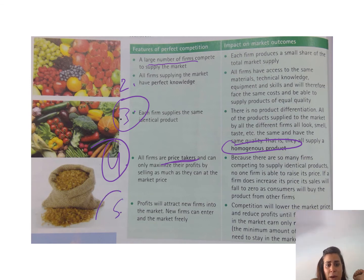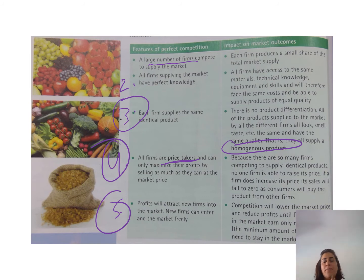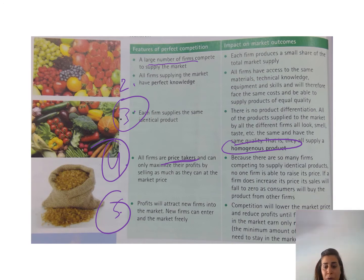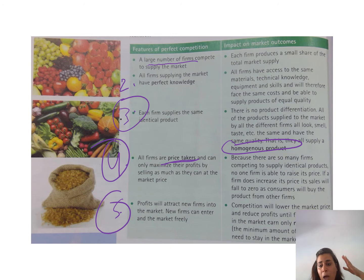The fifth and last feature of perfect competition is that profits will attract new firms into the market. There are no barriers to entry, so if I know that producing a particular product is causing a lot of profits to competing firms, I would definitely want to enter the market and start producing similar products in order to make profits.